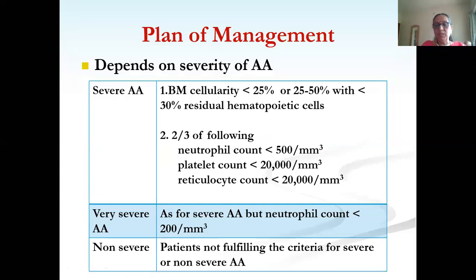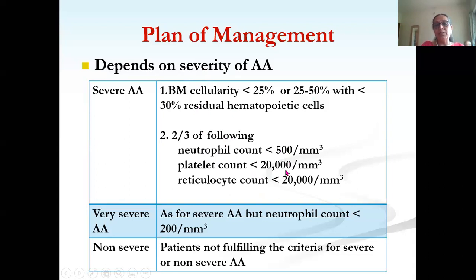Criteria for severe aplastic anemia: bone marrow cellularity below 25%, or below 50% with less than 30% residual hematopoietic cells, PLUS two of: neutrophil count below 500, platelets below 20,000, absolute reticulocyte count below 20,000/mm³. Very severe aplastic anemia is the same but with neutrophils below 200. Non-severe aplastic anemia does not fulfill these criteria. This patient met criteria for severe aplastic anemia.